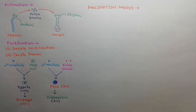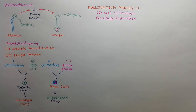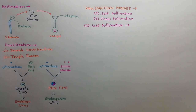The next topic is pollination modes. Transfer of pollen grains from any flower to the stigma of the same flower or another flower is called pollination. There are two modes of pollination: self-pollination and cross-pollination. Transfer of pollen grains from one flower to the stigma of the same flower or another flower of the same plant is called self-pollination.